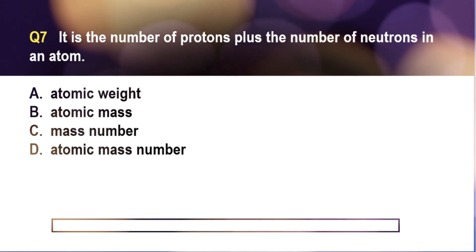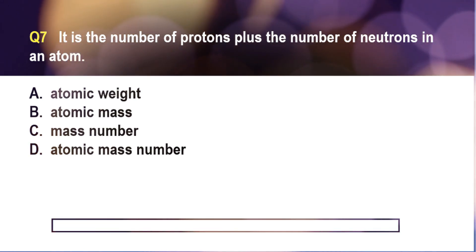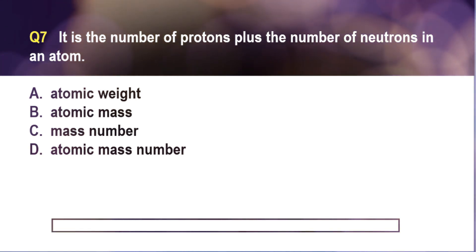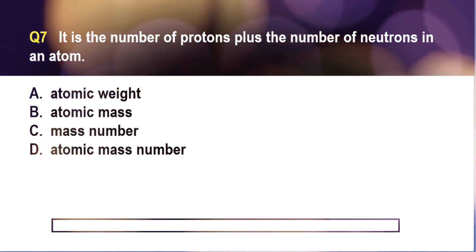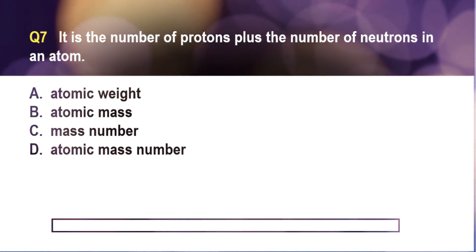Question number seven. It is the number of protons plus the number of neutrons in an atom. A. Atomic weight, B. Atomic mass, C. Mass number, D. Atomic mass number.